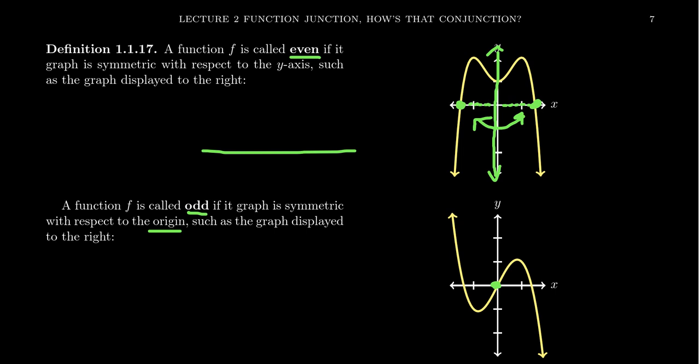If your function was symmetric to the x-axis, then when you reflect across the x-axis, you should find another point. But that would violate the vertical line test. So a non-zero function cannot be symmetric with respect to the x-axis. We're not going to worry about that type of symmetry when it comes to functions.